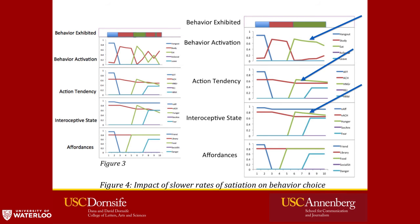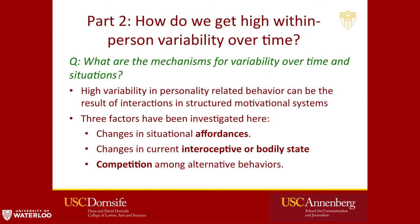This demonstrates that the same kind of motivational structure can give you very high within-individual variability — and across individuals, you also get this very stable personality structure. We've shown how three different factors — affordances, interoceptive bodily state, and the role of competition — play out in producing that variability.